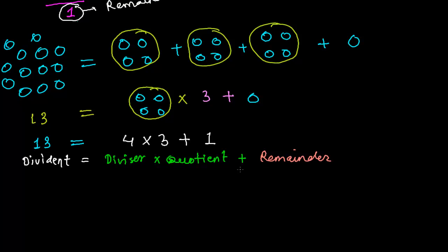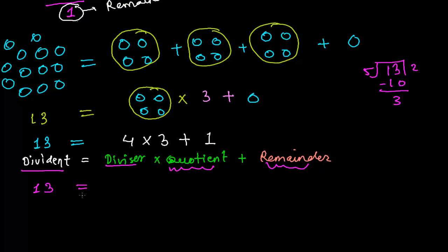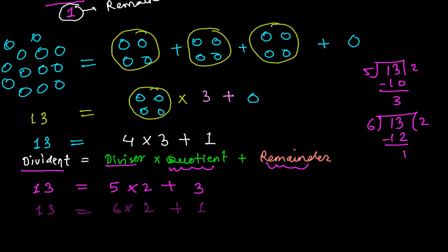When we change the dividend and divisor, the quotient and remainder change accordingly. If I divide 13 by 5, I get quotient 2 and remainder 3, so 13 = 5 × 2 + 3. If I divide 13 by 6, I get quotient 2 and remainder 1, so 13 = 6 × 2 + 1.